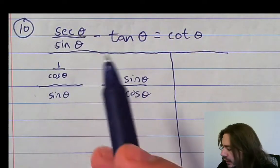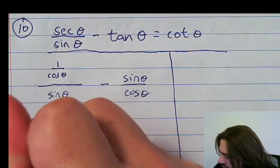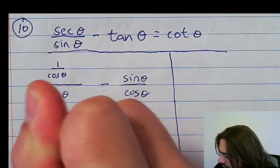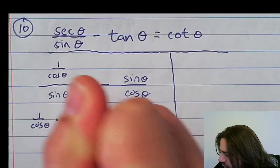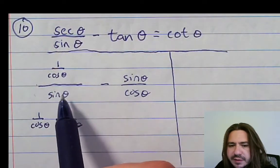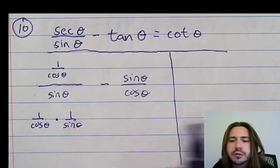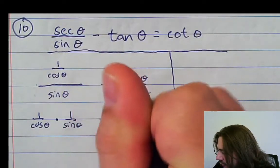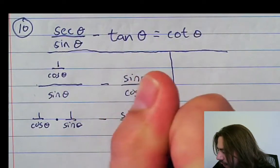you typically want to rewrite it as multiplication by the reciprocal. So we're going to multiply 1 over cosine theta times 1 over sine theta. So these two are equivalent, right? Dividing by sine is the same thing as multiplying by 1 over sine. I'm going to leave this fraction the way it is for right now.